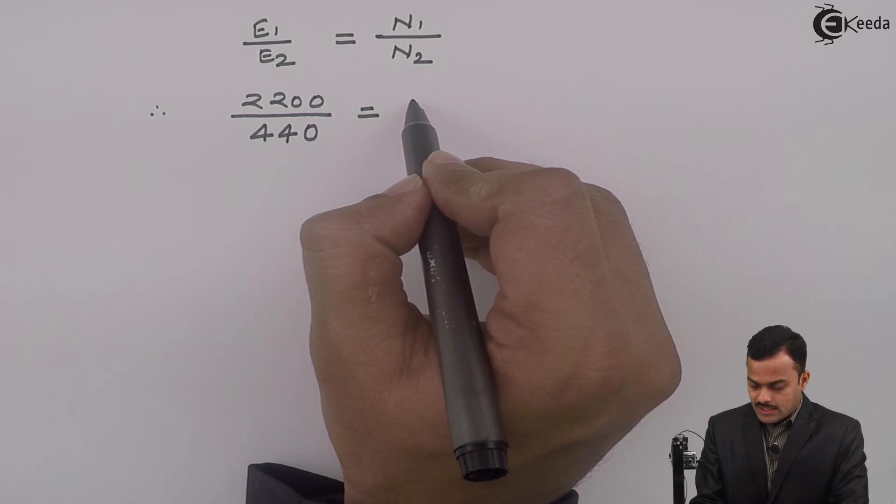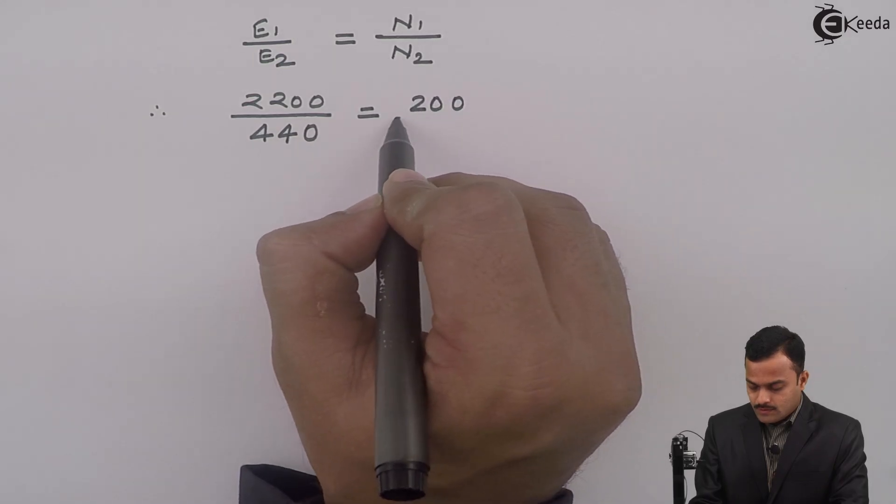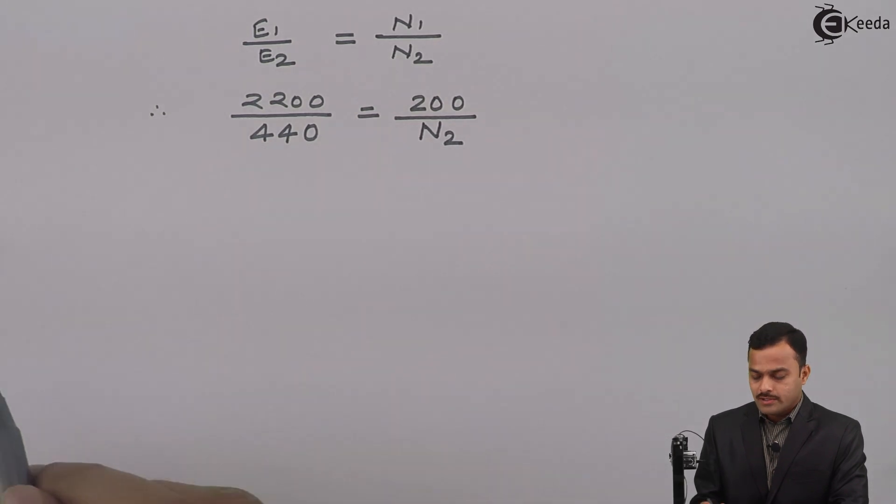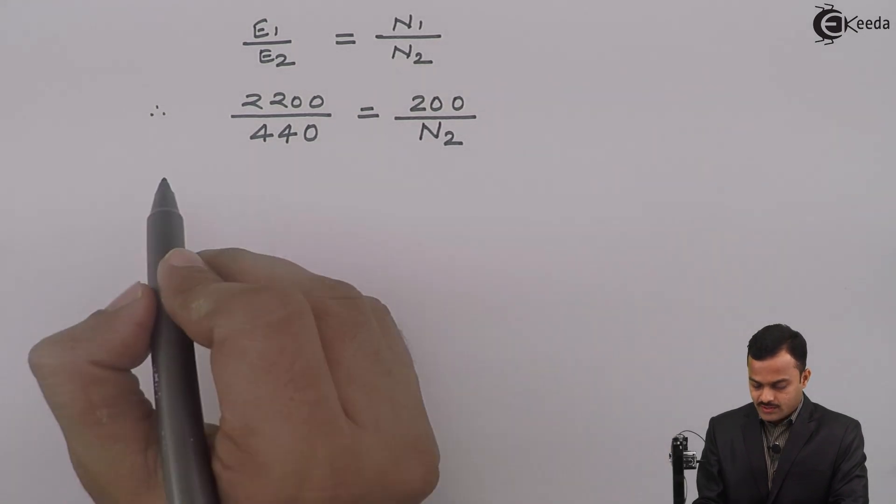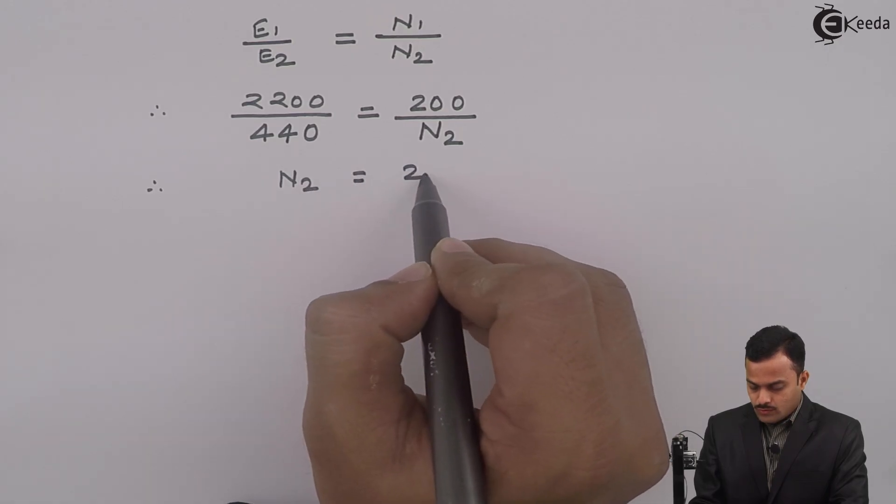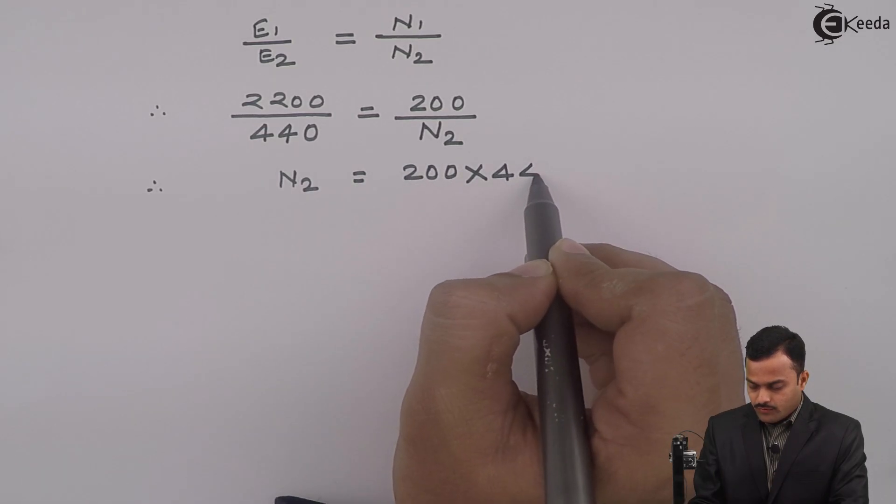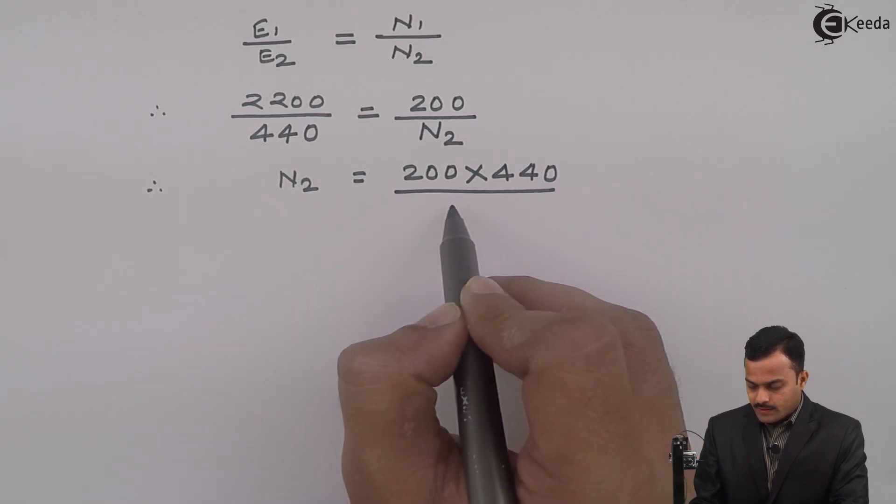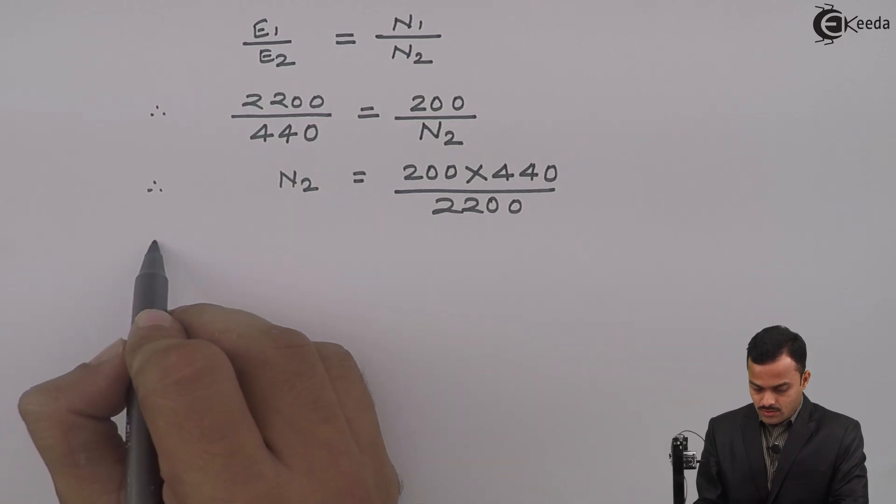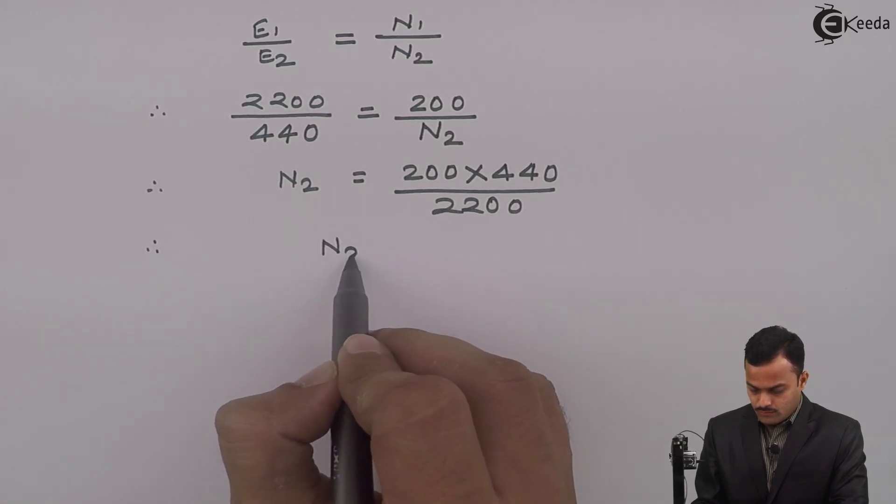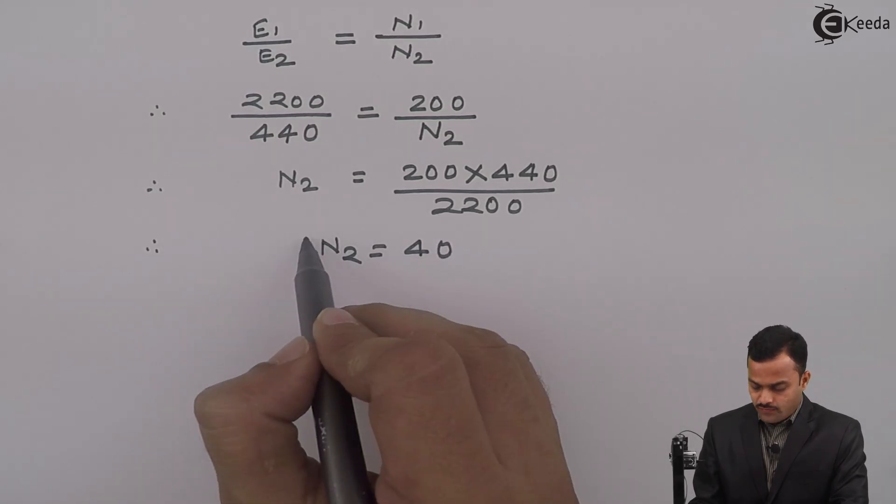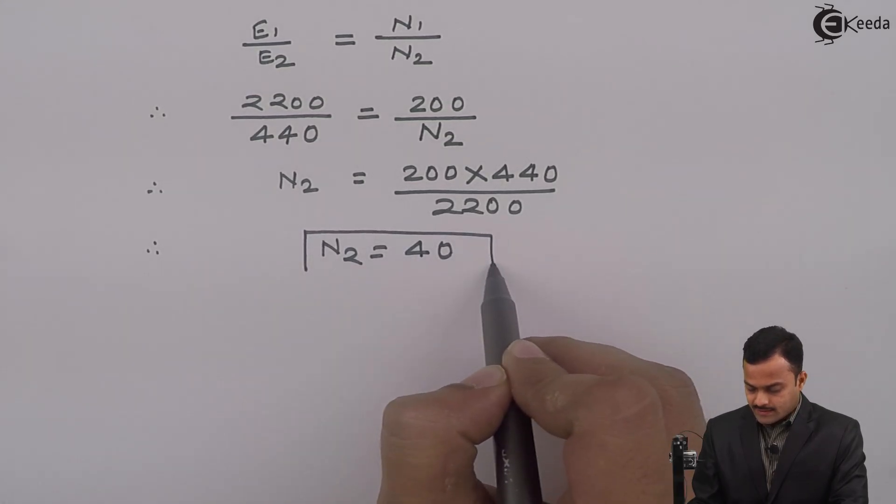Number of primary turns are 200. So we can calculate number of secondary turns N₂ by solving this equation. N₂ = (200 × 440) / 2200. If you solve, you will get N₂ = 40. So 40 turns you will get at the secondary side.